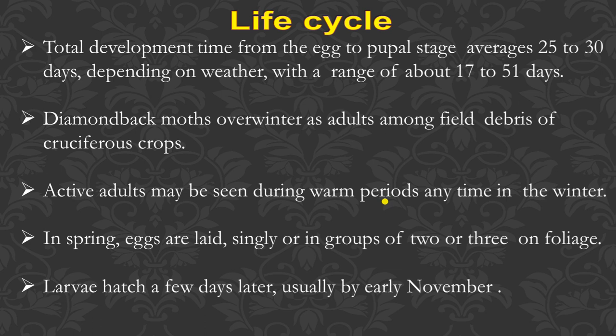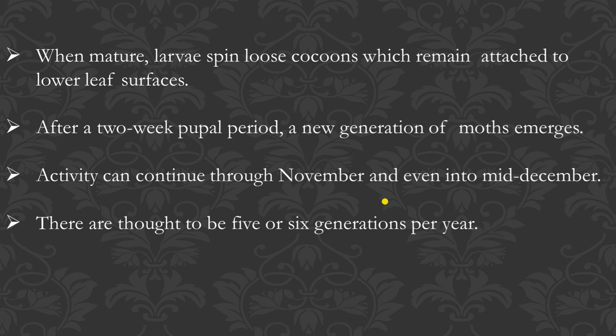The life cycle total development time from egg to pupal stage averages 25 to 30 days depending on weather, ranging from a minimum of 17 days to a maximum of 51 days. Diamondback moth overwinters as adults among field debris of cruciferous crops and remains in crop residue until the next cropping season. Active adults may be seen during warm periods in winter. In spring, eggs are laid singly or in groups of two or three on foliage.